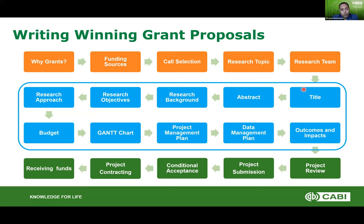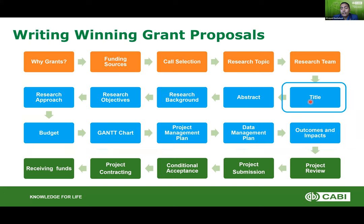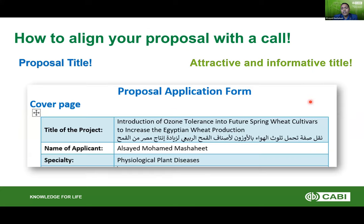Although we will start talking about how to write the title and abstract first, it is highly recommended you leave these two to the last, because they need to be crafted. When you finish writing the whole proposal, you are more suited to write them perfectly. So we'll discuss them in the order they appear in the proposal, but my advice is to write them at the very end.